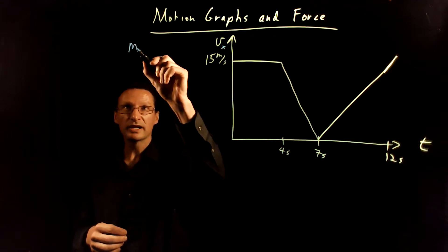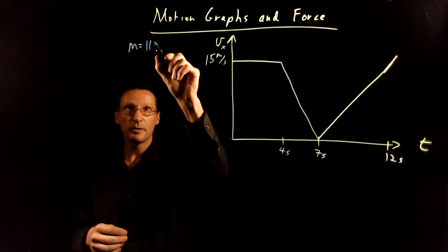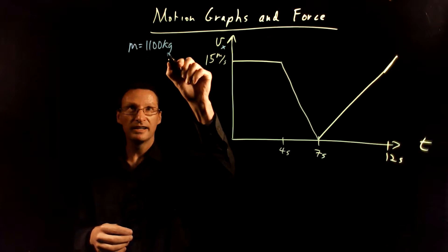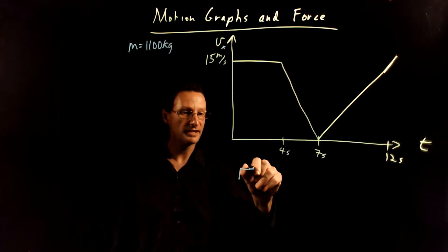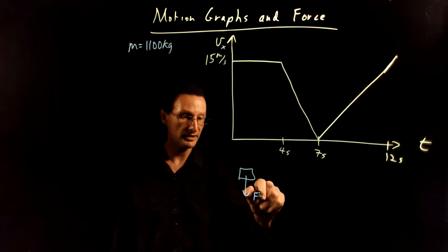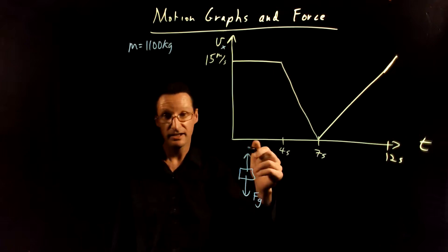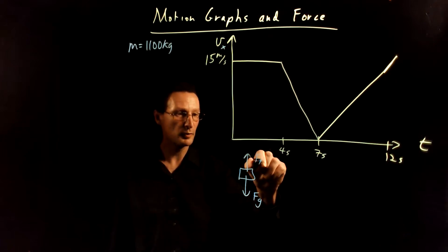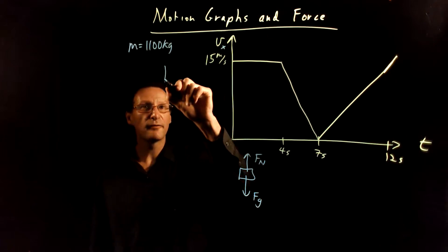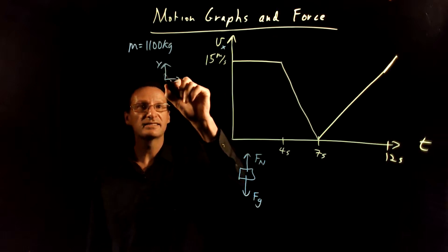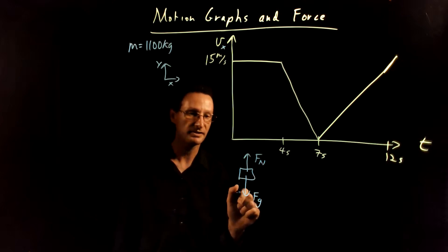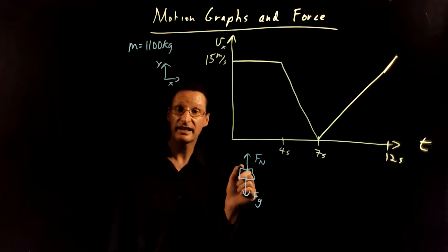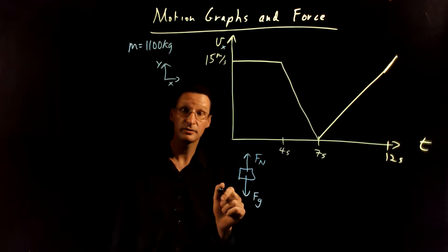We're going to need to know the mass of the car. Imagine the mass of the car is 1,100 kilograms. Let's draw the free body diagram for the car. The car has a gravitational force downward and a normal support force from the road. But we really care about just the forces in the x direction on this — we don't care about the y direction forces. So what does this graph say the net force must be in the x direction?